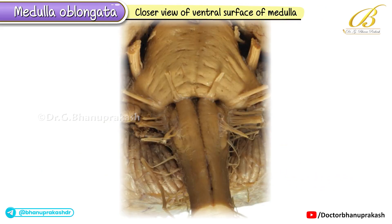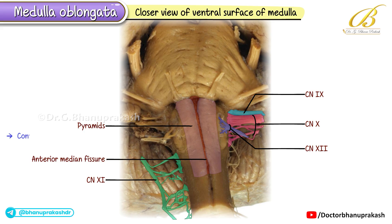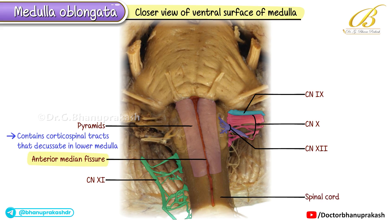This slide is a closer view of the ventral surface of the medulla. From here, we can identify the origin of the lower cranial nerves, CN9 to CN12, which emerge from this region. The pyramids are elongated ridges on either side of the anterior median fissure, containing corticospinal tracts that eventually decussate in the lower medulla. The anterior median fissure continues downward onto the spinal cord.